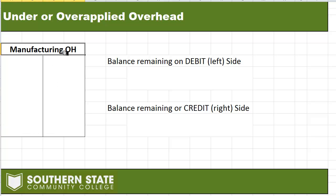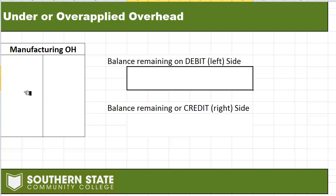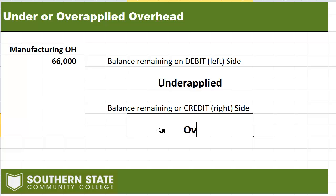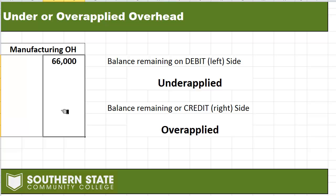I've got my manufacturing overhead T-account here. The debit side represents actual amounts of overhead that we have incurred and recorded. The credit side represents estimated or budgeted amounts that we have applied to overhead. If we have a balance remaining on the debit side, that means we've under-applied — we didn't budget enough overhead. If we have a balance remaining on the credit side, as in this problem, that's considered over-applied — we budgeted for too much overhead and didn't end up spending that much. Either way, we have to get rid of that balance and close it out.